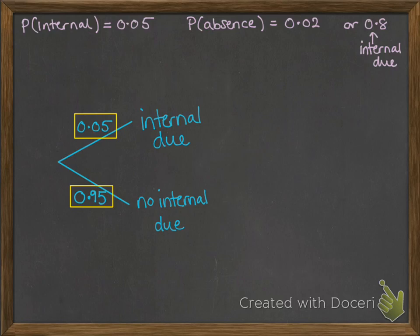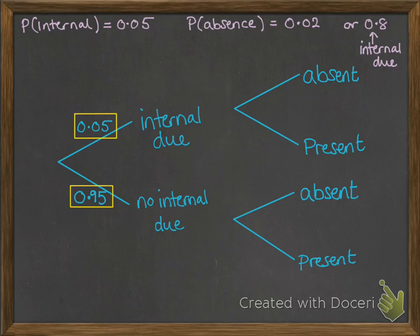After we've decided if he's got an internal due or not we can set up the next set of branches which is he will either be absent or present. The top half of the tree diagram is he has an internal due then we'll decide whether he's absent or present, and the bottom half he doesn't have an internal due and then we'll decide if he is absent or present.